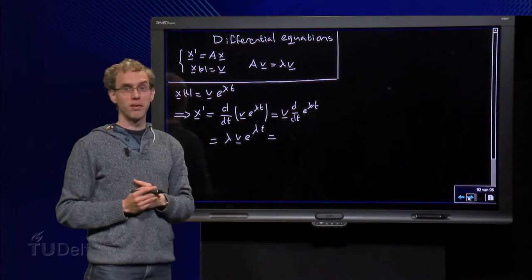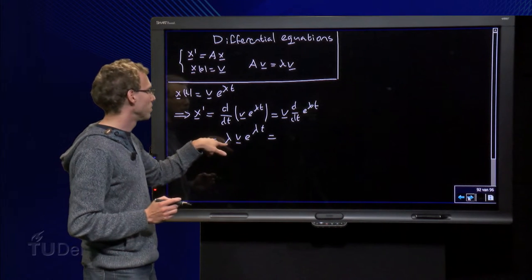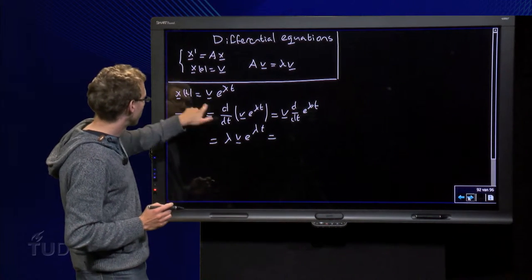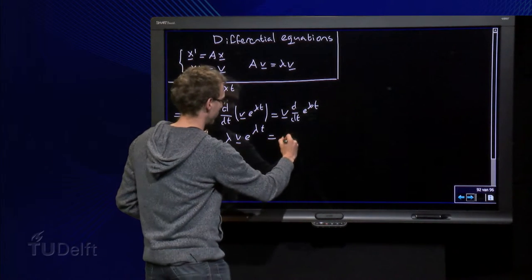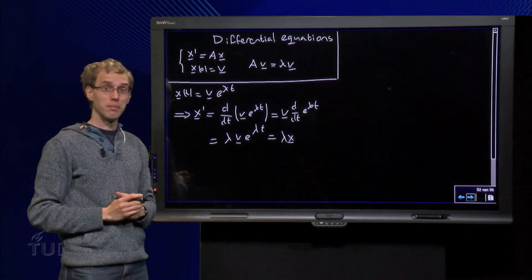And we have just e to the power lambda t left to differentiate. Well that is straightforward, you get lambda times e to the power lambda t, so we get lambda v e to the power lambda t equals lambda times x. So x prime equals lambda x.